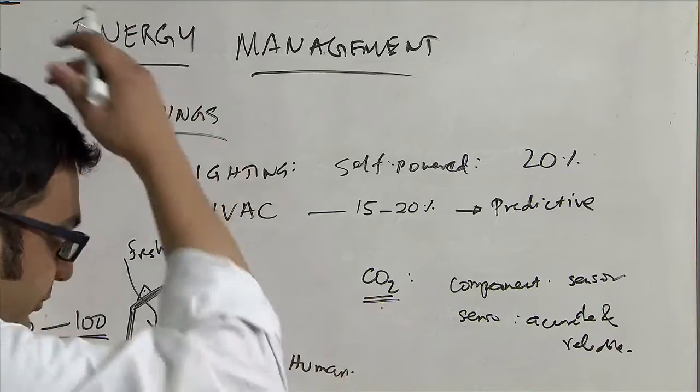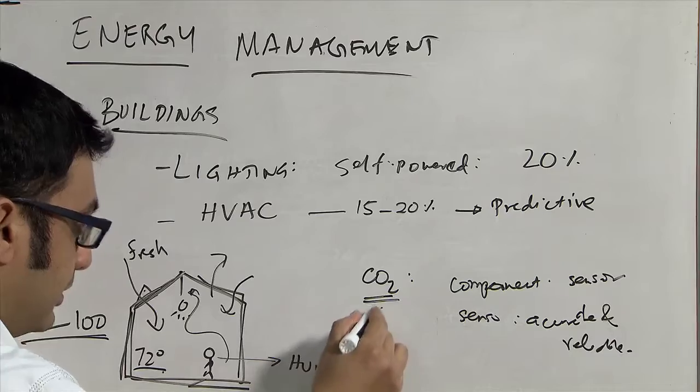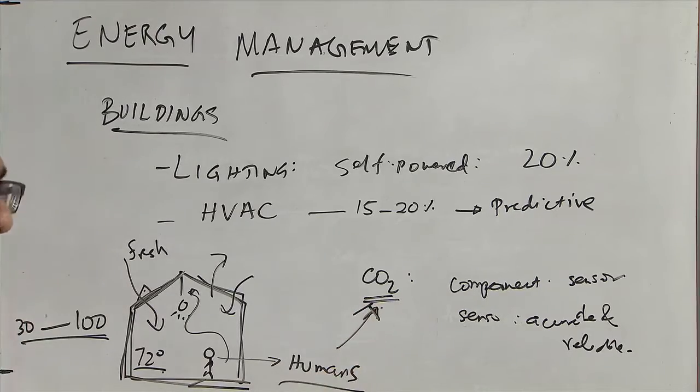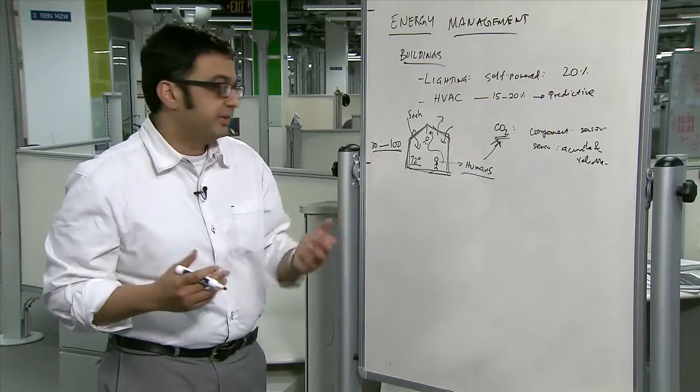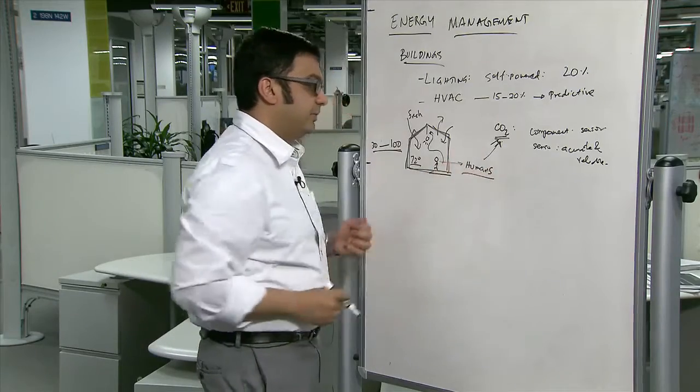Think about where this carbon dioxide comes from. It comes from these humans occupying the space. We breathe the carbon dioxide out. We have animals and other things, but primarily it's the human beings.